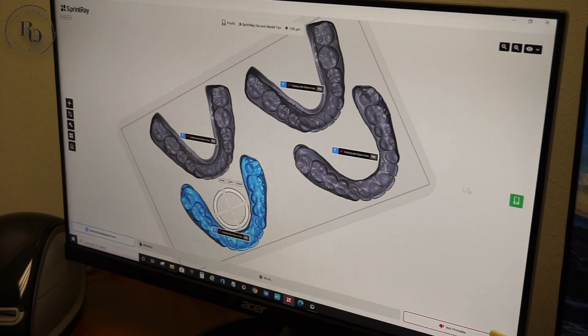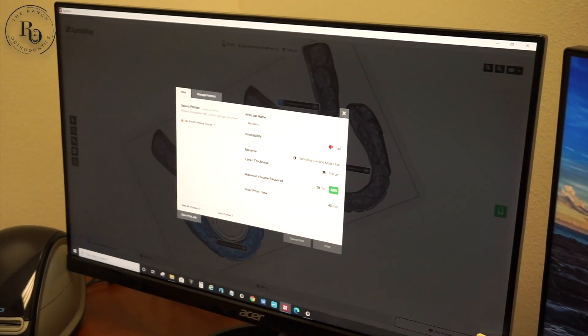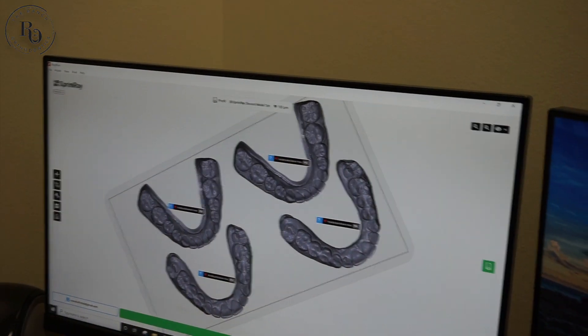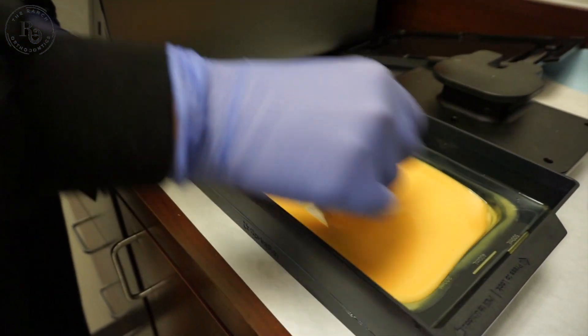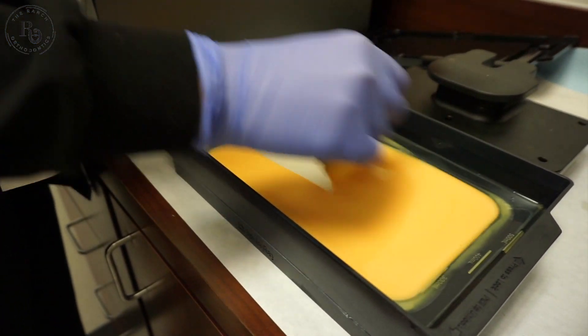This entire print is going to take about 30 minutes, so that's pretty fast. When we first started printing it used to take us about four hours to print models, so things moved along pretty quickly.